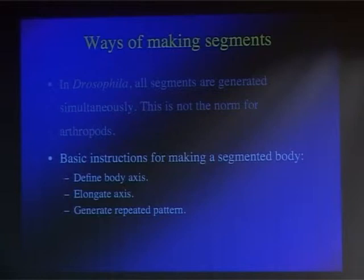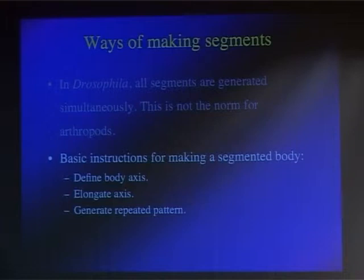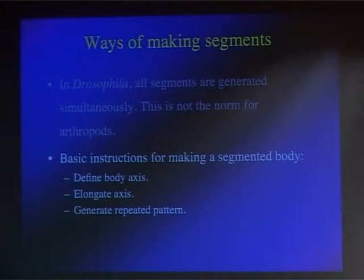The first stage is to define the body axis. If segments are being added from the posterior, the embryo has to decide where the posterior is. This is actually usually determined in the egg already — the egg is inherently asymmetrical either by shape or, as we heard earlier, by point of sperm entry. But molecularly the body axis has to be defined, so the genes specific to each pole of the animal have to be activated. Once the posterior is defined, the axis has to elongate from the posterior end, and once elongating, a repeated pattern has to be generated overlaid on this elongating axis.